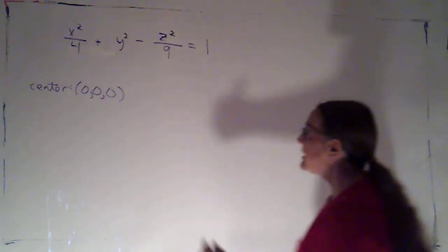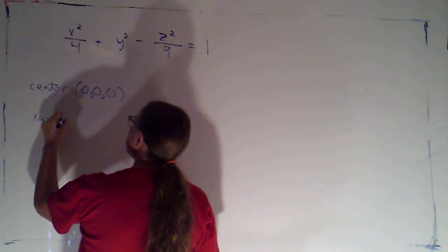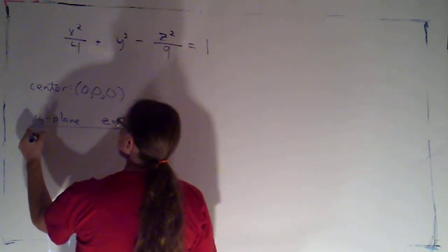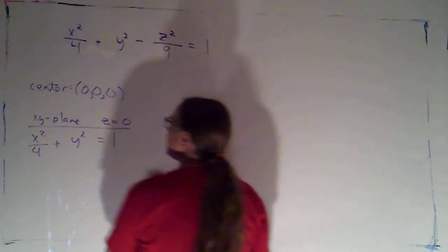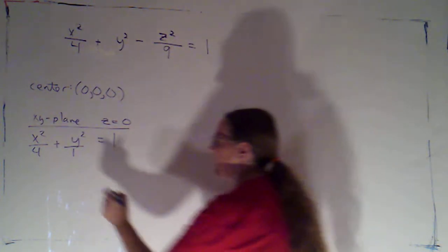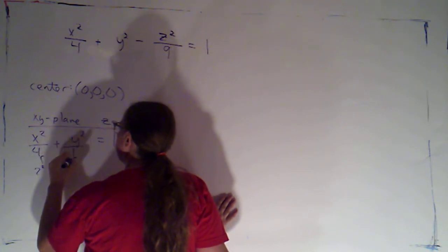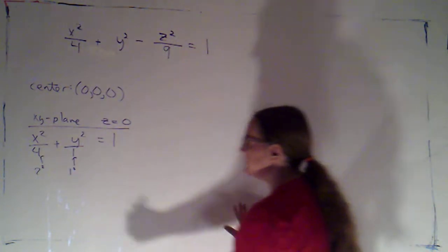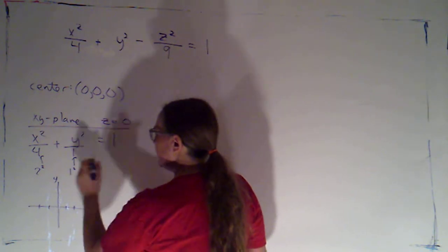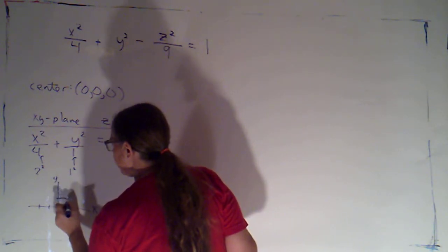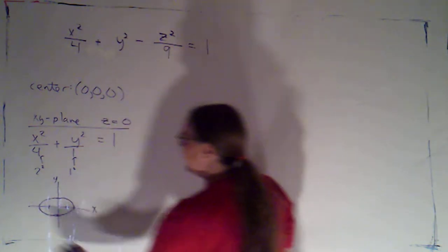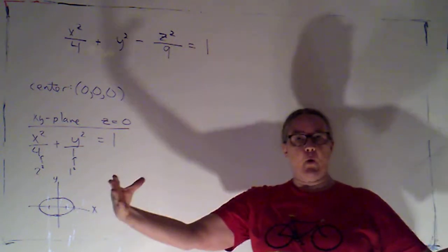So let's draw our traces. Let's start in the x, y plane. That has as its equation z equals zero, so I would have x squared over four plus y squared equals one. Notice y squared is equivalent to y squared over one. I can write that four as two squared and that one as one squared. So in the x direction I would come two away from the center, in the y direction I would come one away from the center. Connect those points with a beautiful curve and we have a lovely ellipse that's a little bit wider than it is tall.